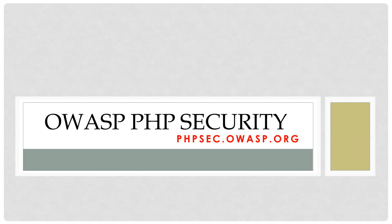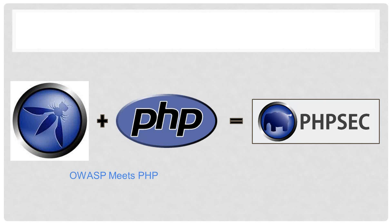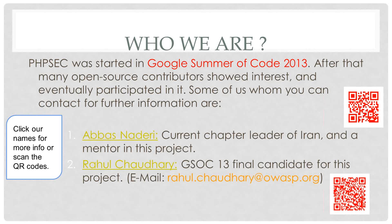Our website is phpsec.owasp.org. You can visit that any time and you should, because it will give you a hands-on view of what the project is. Our logo features an elephant and the project name is PHP Sec, started in Google Summer of Code.